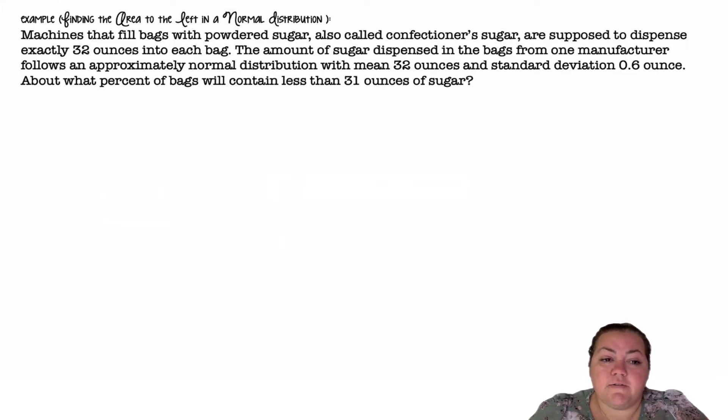Finding the area to the left in a normal distribution. Machines that fill bags with powdered sugar, also known as confectioner sugar, are supposed to dispense exactly 32 ounces into each bag. The amount of sugar dispensed in the bags from one manufacturer follows an approximately normal distribution with a mean of 32 ounces and a standard deviation of 0.6 ounces. About what percent of the bags will contain less than 31 ounces of sugar?